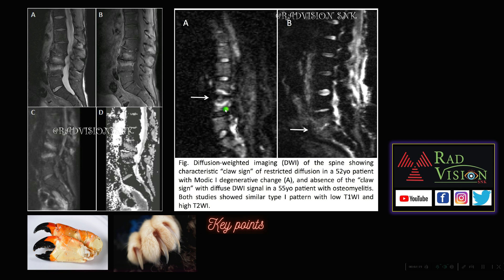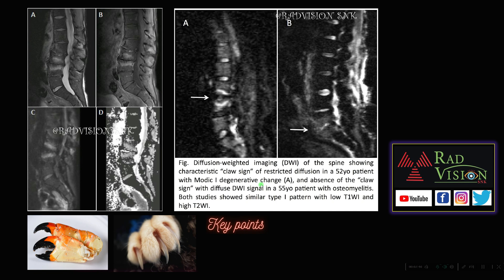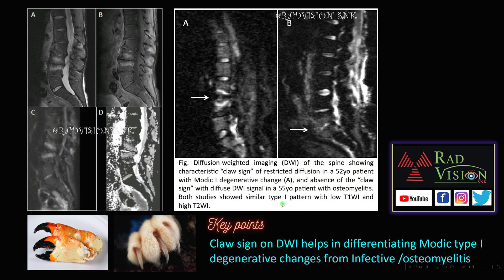Next: here you can see what is classically called the CLASS sign on DWI. The CLASS sign on DWI is seen in type 1 Modic changes and helps in differentiating type 1 Modic changes from osteo-infective causes like osteomyelitis. You can see this is the CLASS sign here. The CLASS sign on DWI helps in differentiating Modic type 1 degenerative changes from infective or osteo-infective causes.